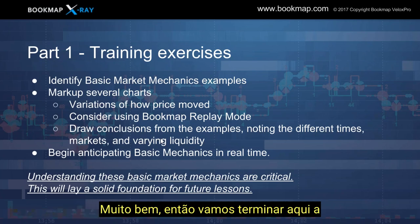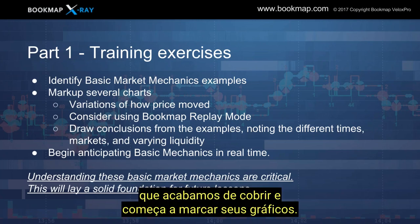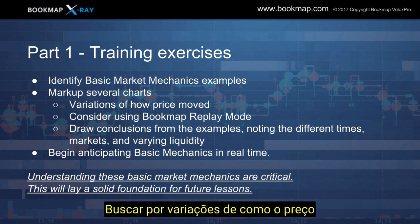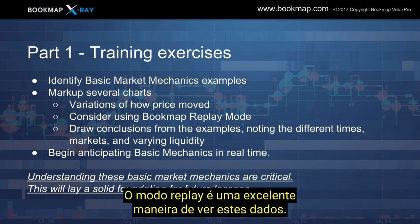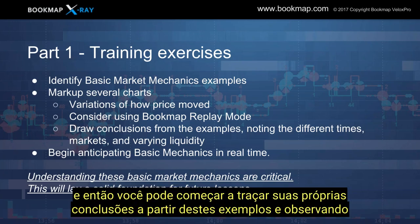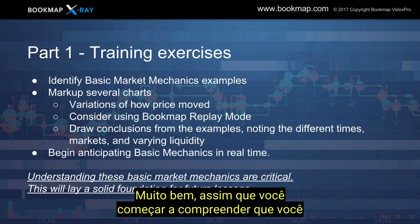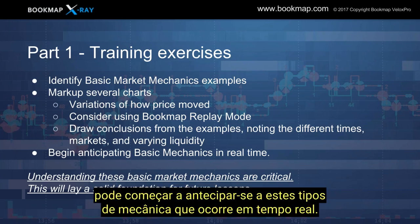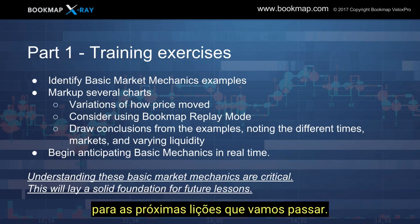Let's end up here with part one training exercises. Go back and start to identify these basic market mechanics that we just covered. Start to mark up your charts — the more the better. Look for the variations in how price moved within these examples. Consider using the Bookmap replay mode — it's an excellent way of seeing this data; you can replay it again and again within that replay file. Start to draw your own conclusions, noting the different times, the different markets, the varying liquidity, the speed that it moves. Once you start to comprehend that, you can start to anticipate these kinds of mechanics occurring in real time. Understanding these basic market mechanics are critical — this will lay the foundation for the next few lessons.